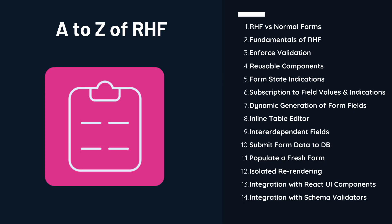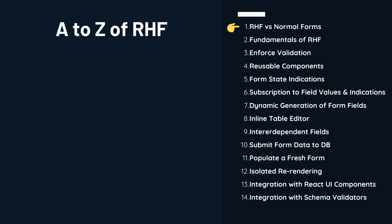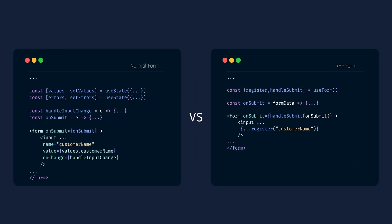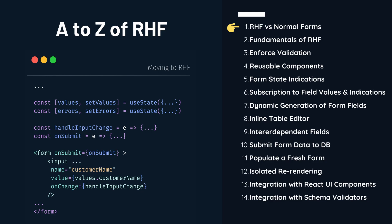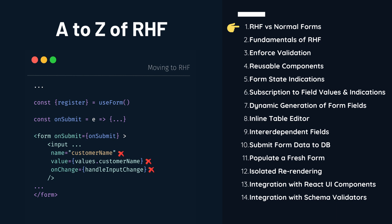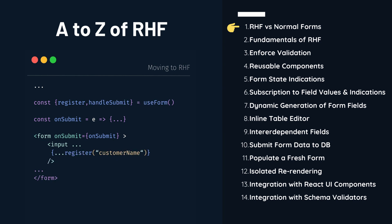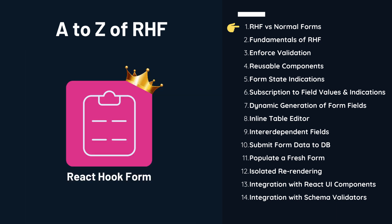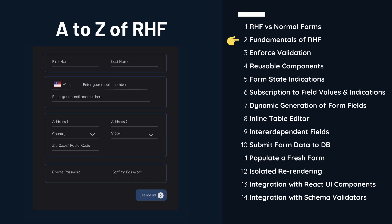Now let's briefly discuss what all things we are going to achieve with React Hook Form and its promising features. First of all, the comparison between React Hook Form versus normal forms — we will implement the basic needs of a React form without a form library and then do the same with React Hook Form, so we get a quick picture of how efficient the library is. Then we will discuss the difficulties in creating React forms without a form library like React Hook Form. Once we understand the relevance of React Hook Form, we will get started with its fundamentals — how to register a form control, how the library manages form data without React state variables, and how to pass default values.